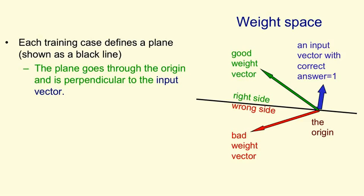For any weight vector, like the green one, that's on that side of the hyperplane, the angle with the input vector will be less than 90 degrees. So the scalar product of the input vector with the weight vector will be positive. And since we've already got rid of the threshold, that means the perceptron will give an output of 1. It'll say yes. And so we'll get the right answer.